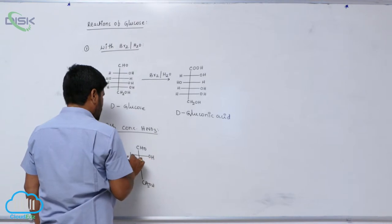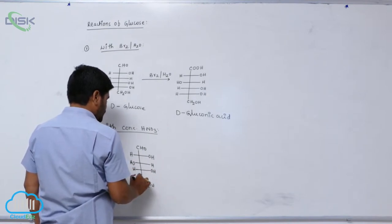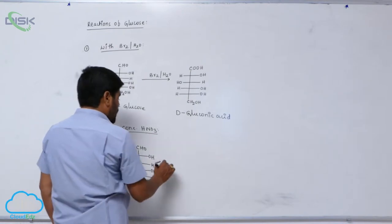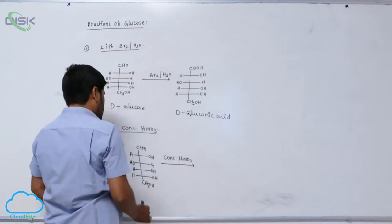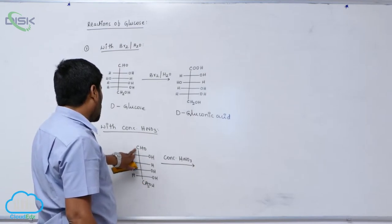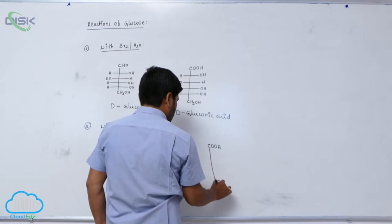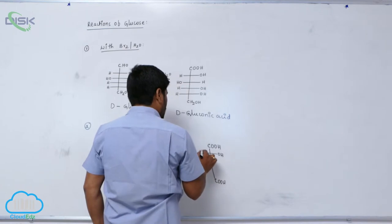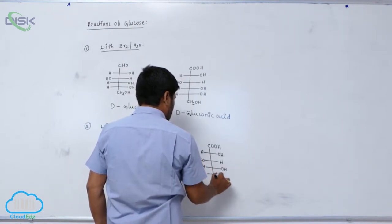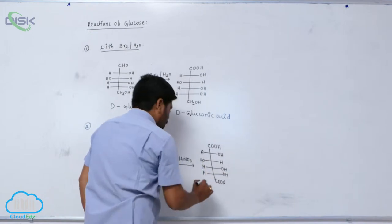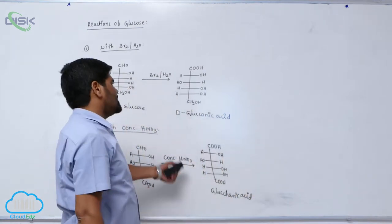When D-glucose reacts with concentrated nitric acid, the primary alcoholic group converts into acid, and the aldehyde group also converts into acid — COOH on both ends. The product is known as glucaric acid, which is a dicarboxylic acid.